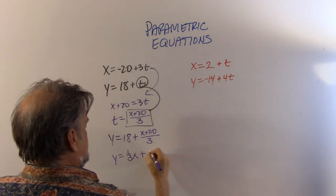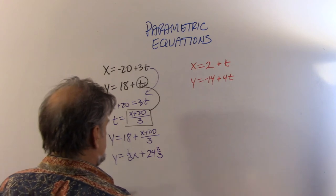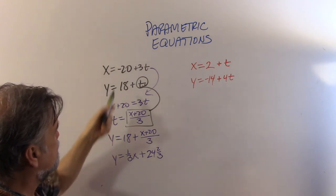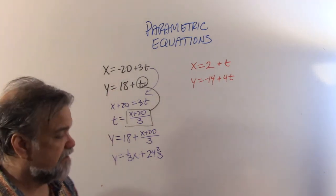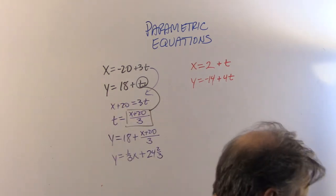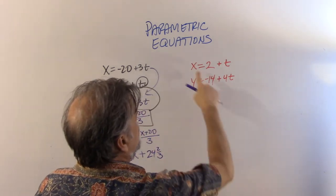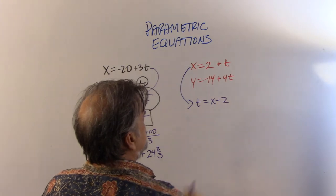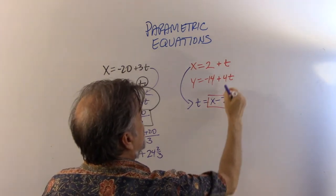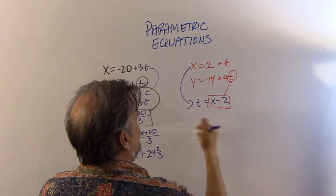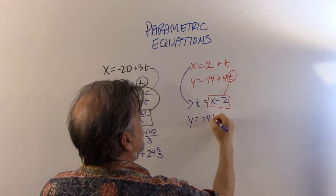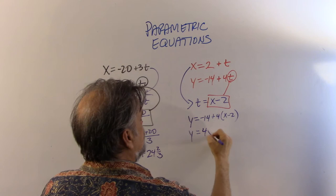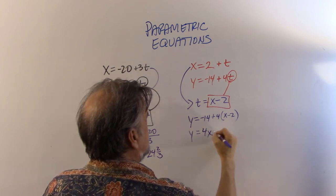So the black ant's line is y = (1/3)x + 24⅔. For the red ant, from x = 2 + t we get t = x - 2. Substituting into y = -14 + 4t gives y = -14 + 4(x - 2) = 4x - 22.